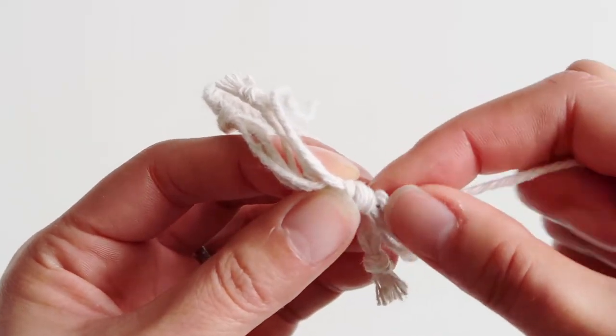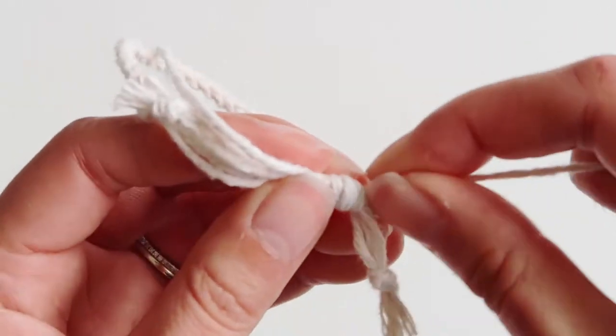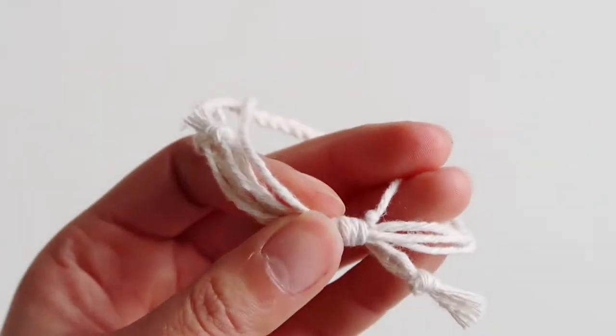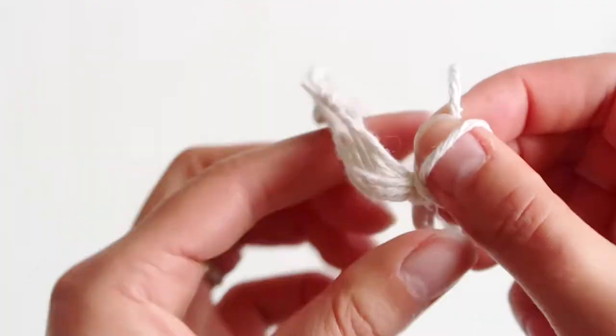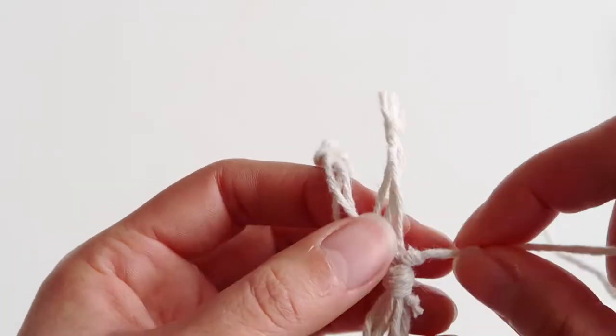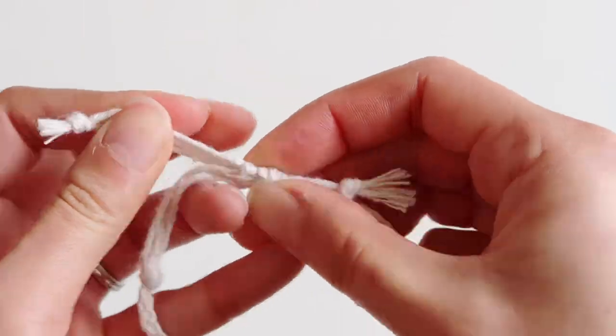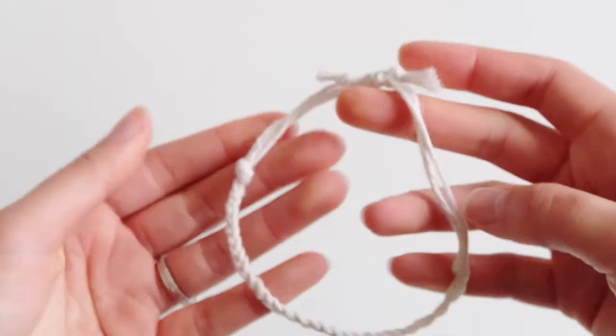As you can see you want to tie the knot as close to the big knot as possible, so make sure you push it all the way in like so. That'll stop the big knot from coming undone and then you basically do the same to the other side.